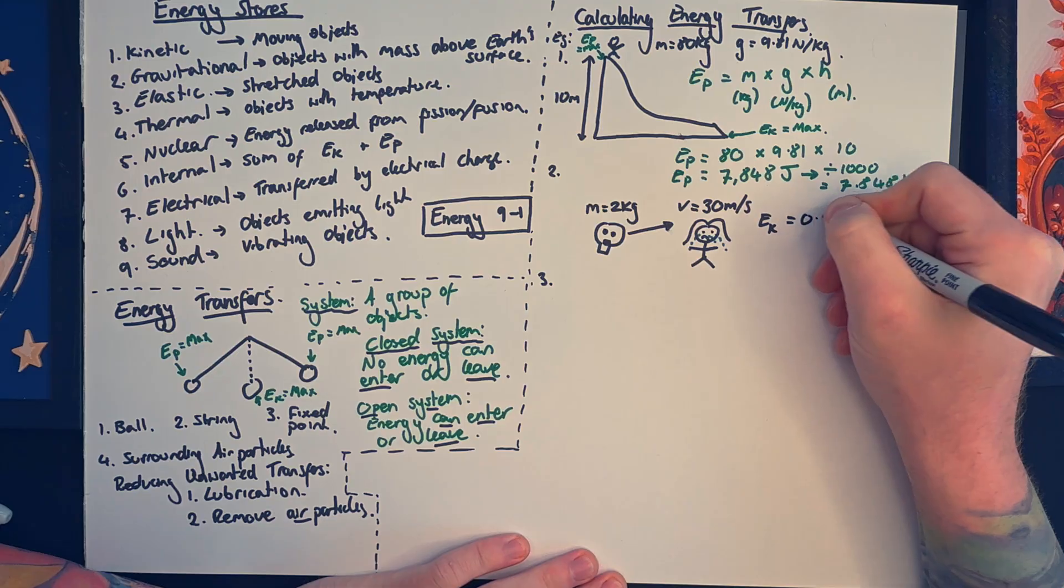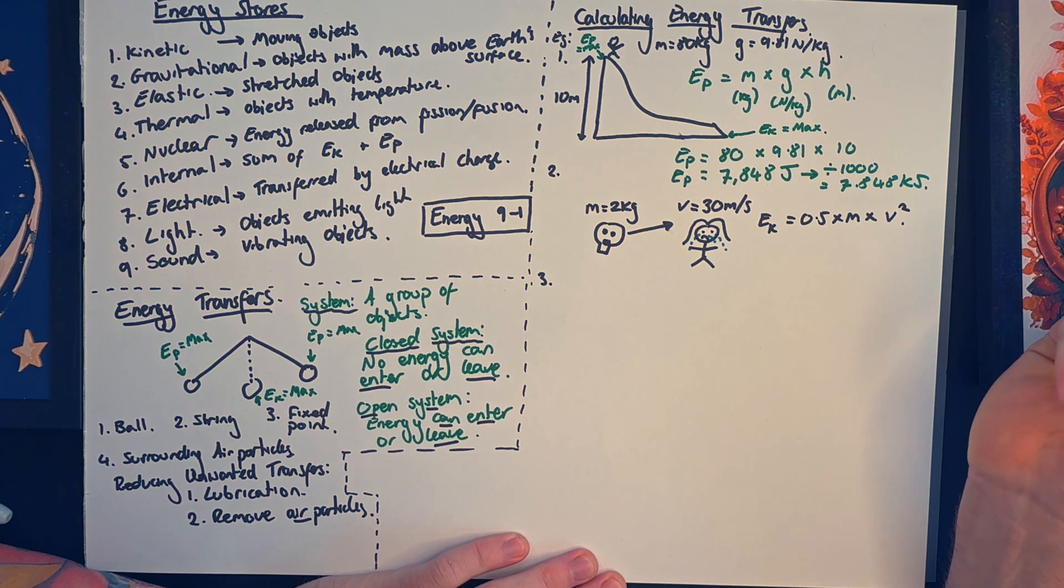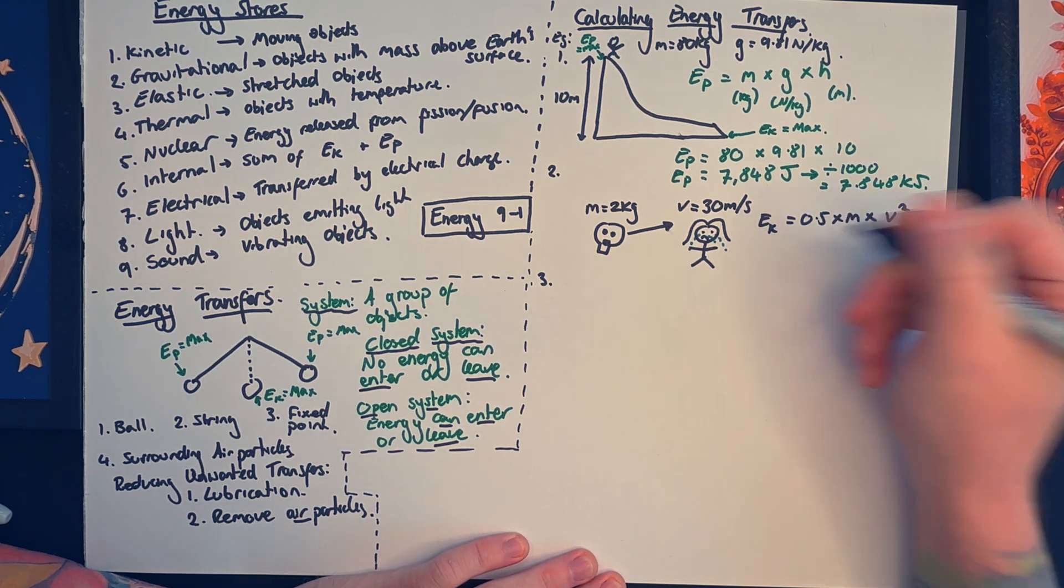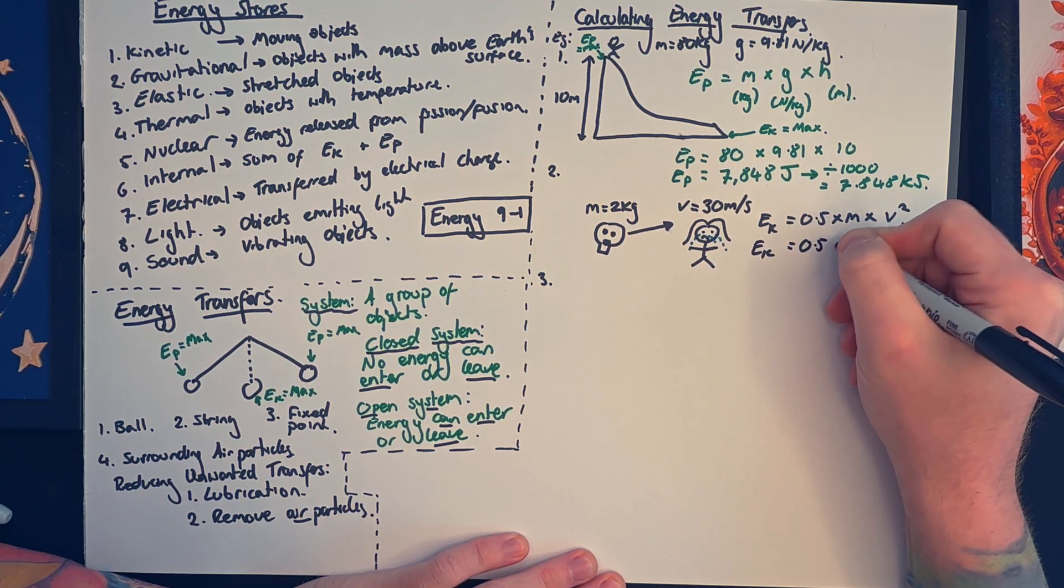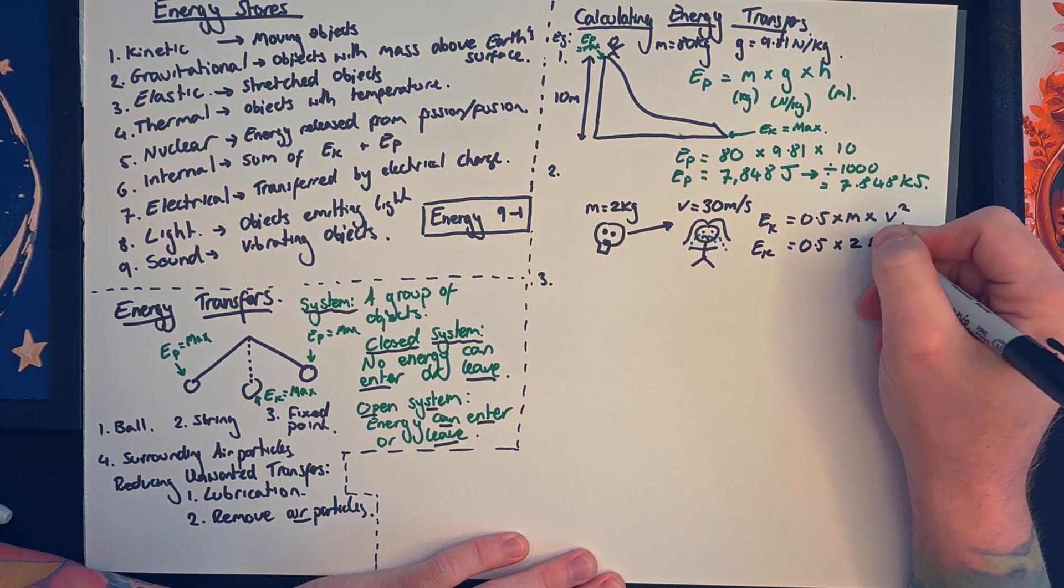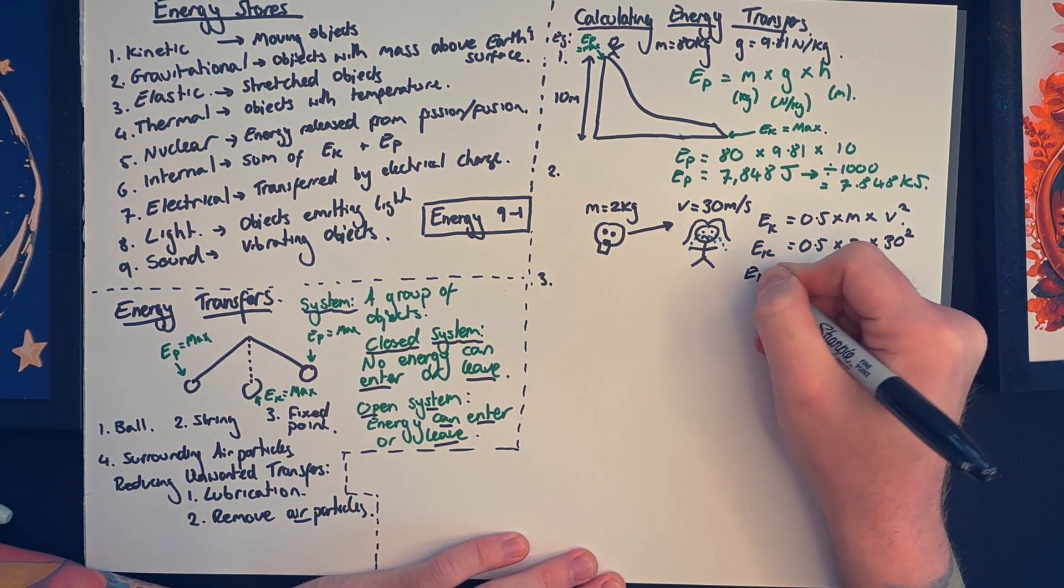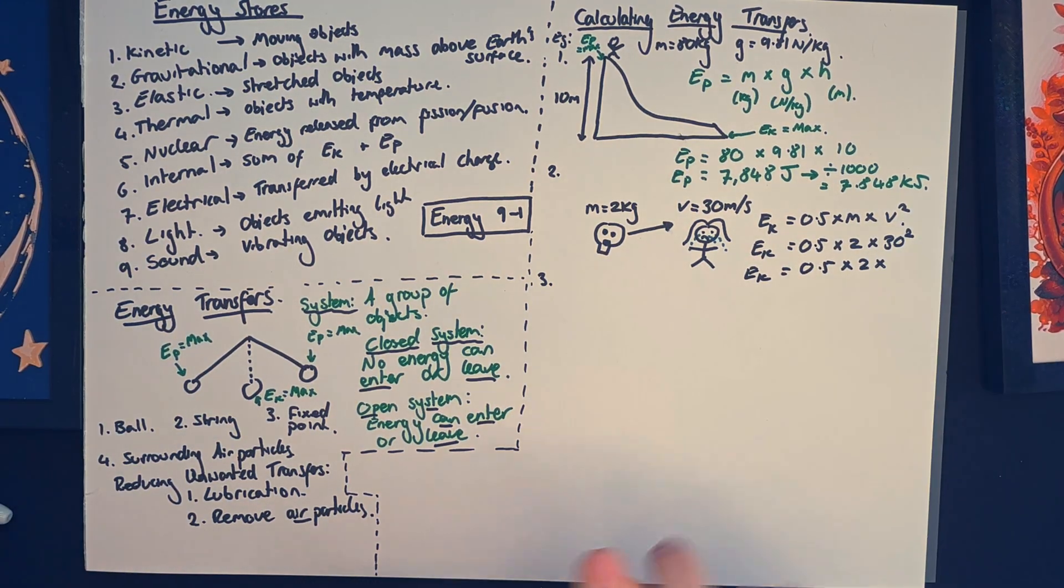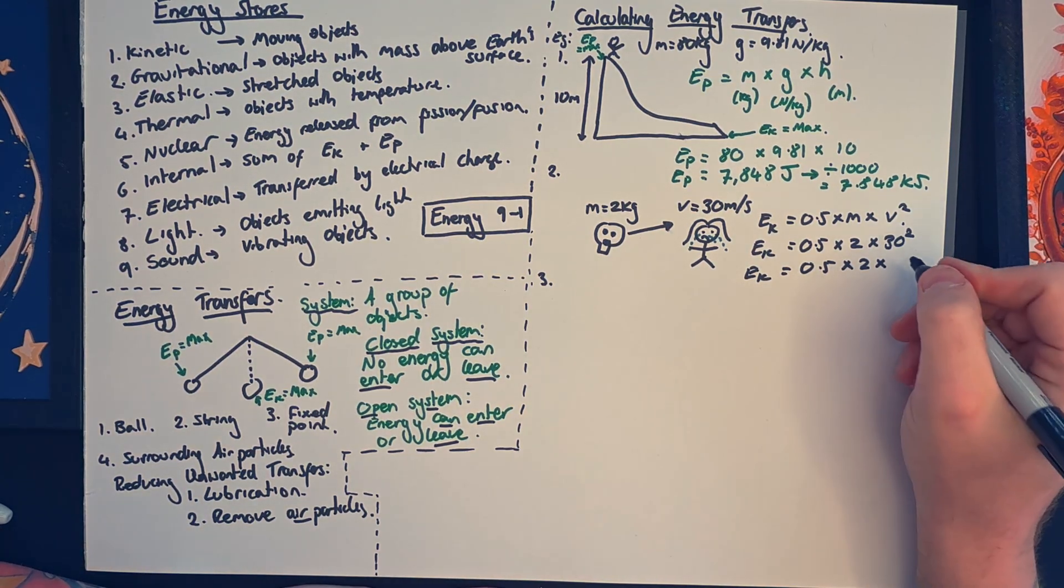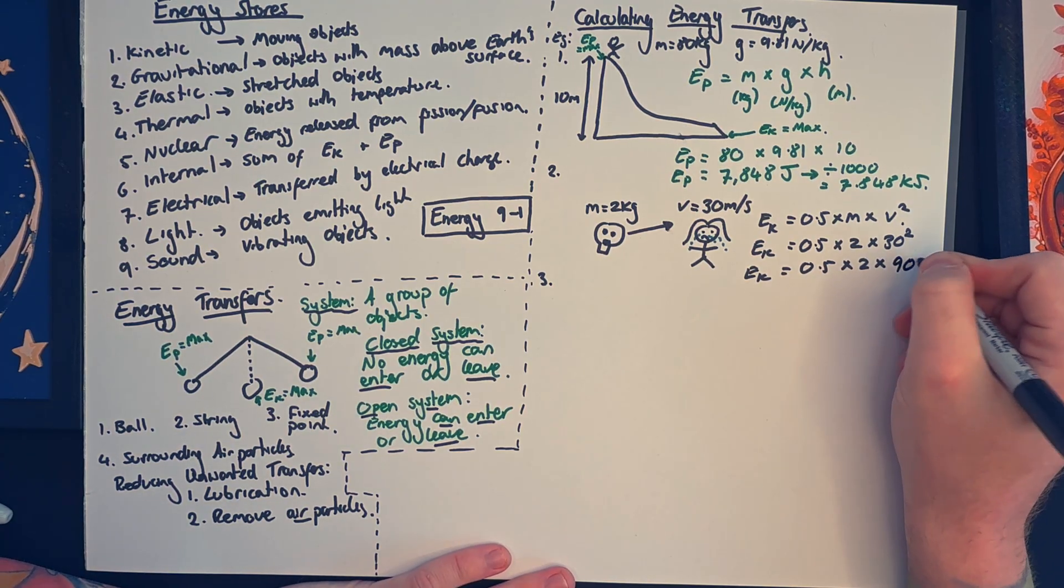So to do this, I record the kinetic energy equation, and that is 0.5 times by the mass times by velocity squared. So I'm going to substitute the values in. The mass of my nan's skull is two kilograms, that's going to go where the m was, that's why I've got the number two. And then the velocity of the skull was 30 meters per second, and that gets substituted where the v is. Don't forget to square that number. So that's 0.5 multiplied by 2 multiplied by 900, and the kinetic energy comes out as 900 joules.